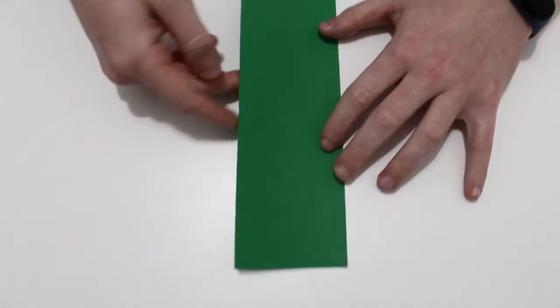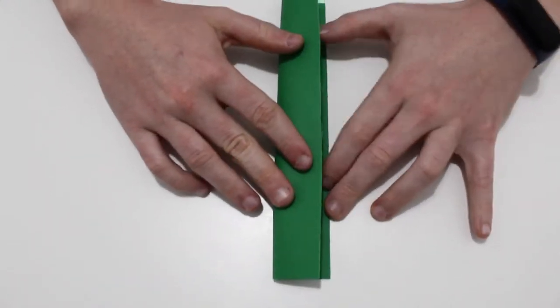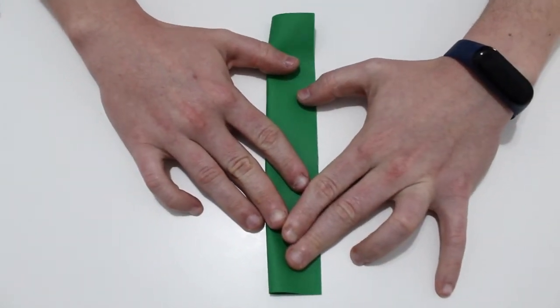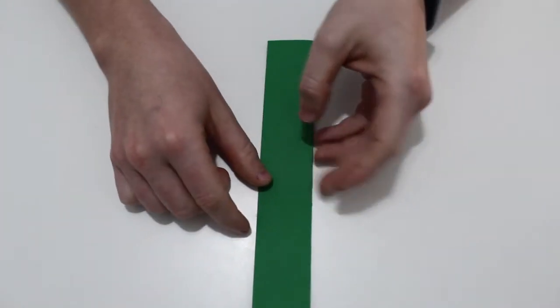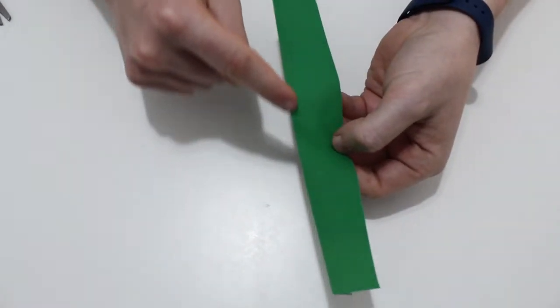Vamos a empezar por el primero. Vamos a doblarlo por la mitad a lo largo. Y usando como eje el lado por el que hemos doblado, vamos a dibujar una hoja.